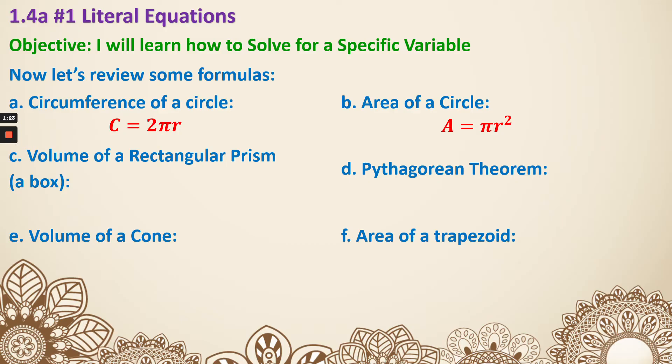Next, volume of a rectangular prism is V = length × width × height. So a rectangular prism is just a shape like this. That is a rectangular prism. Next, Pythagorean theorem. a² + b² = c². That's a formula we have learned for a while.